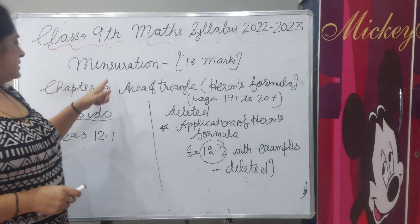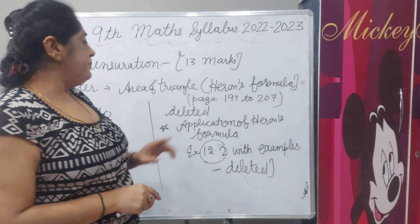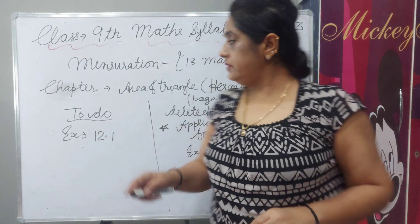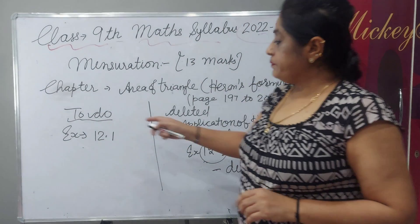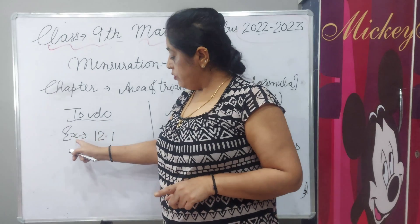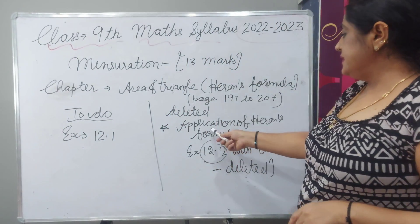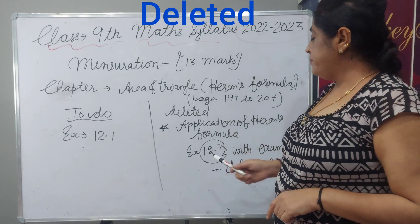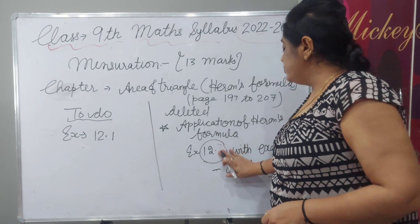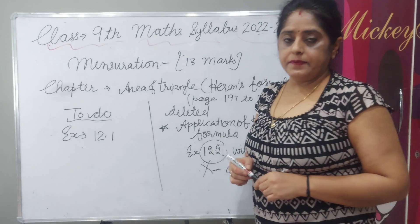In mensuration, there is also the chapter area of a triangle using Heron's formula, page number 197 to 207. You have to do exercise 12.1. One topic is deleted: application of Heron's formula, meaning exercise 12.2 is deleted from your syllabus with examples.